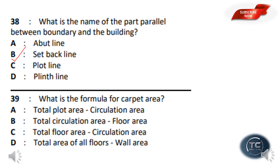The formula for carpet area: the options are total plot area minus circulation area, total floor area minus circulation area, and total area of all floors minus wall area. The answer is Option C — total floor area minus circulation area gives the carpet area.